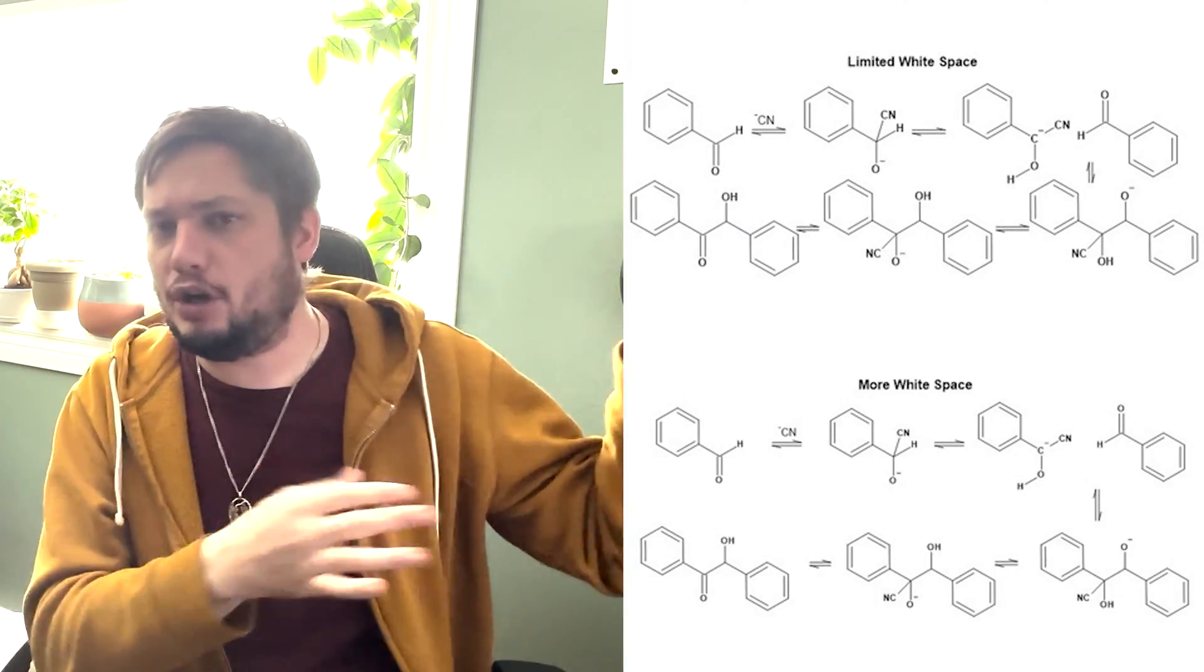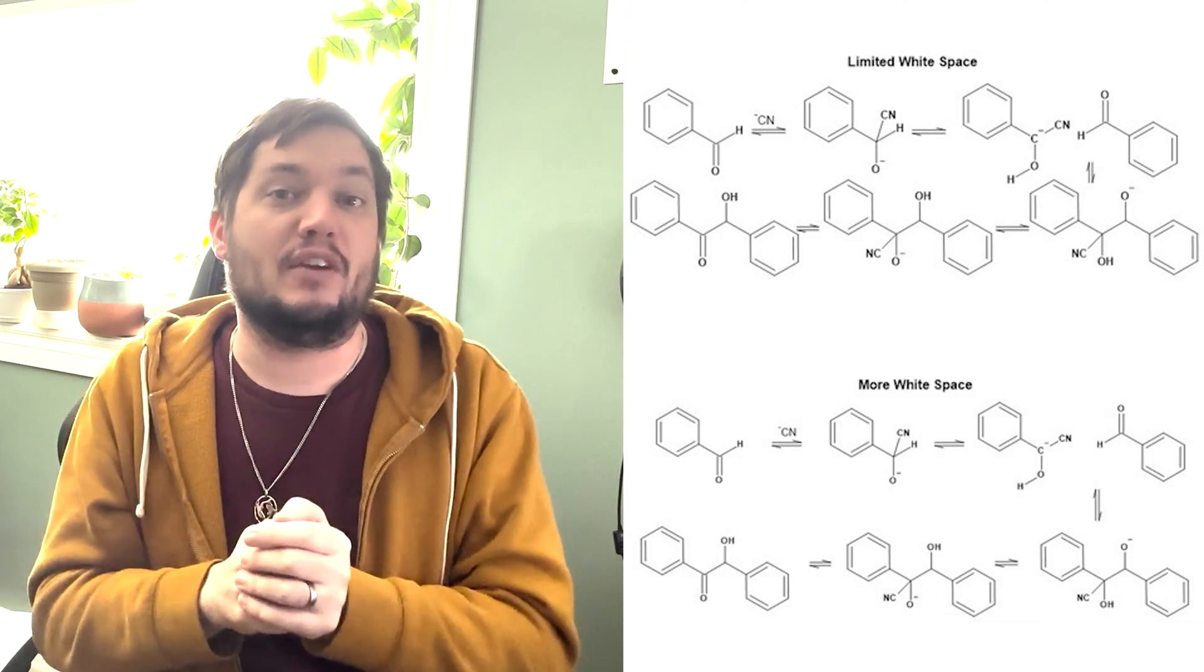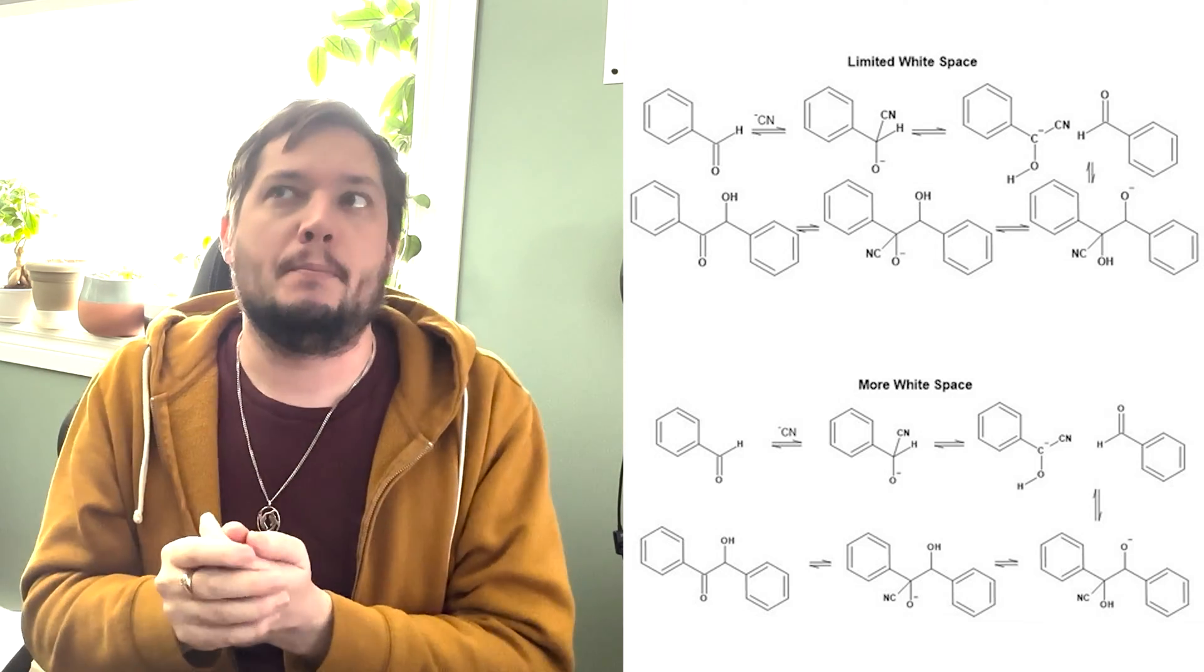The first one I'm going to talk about has to do with the space that you are using. One of the most common sources actually of really bad looking structures is that they're too crowded in one another. I think on the screen right now, we're going to throw up some examples here of what you see when you don't have enough white space.